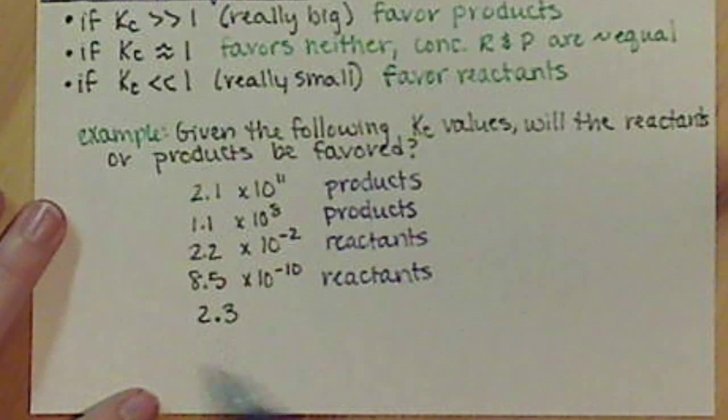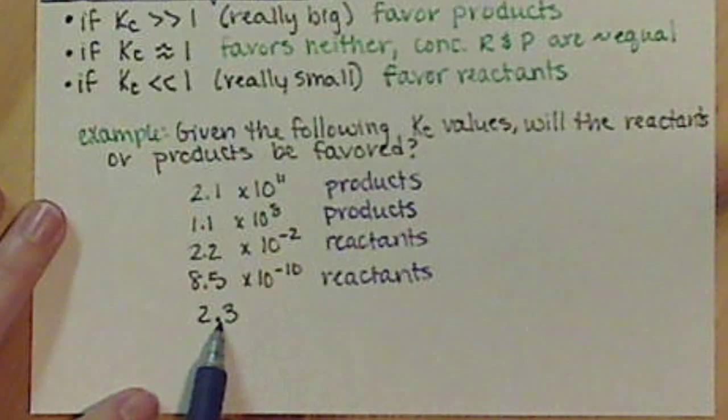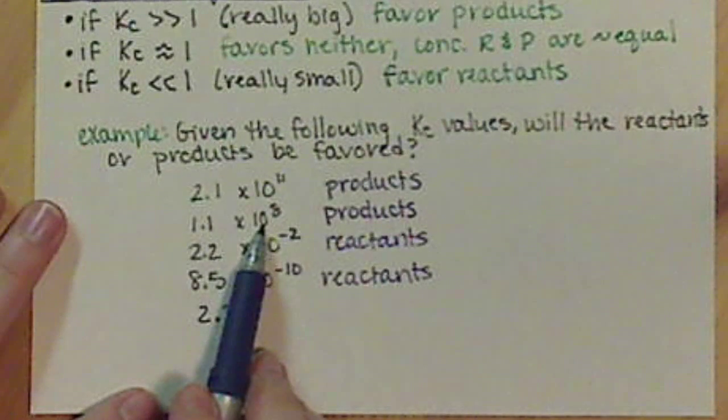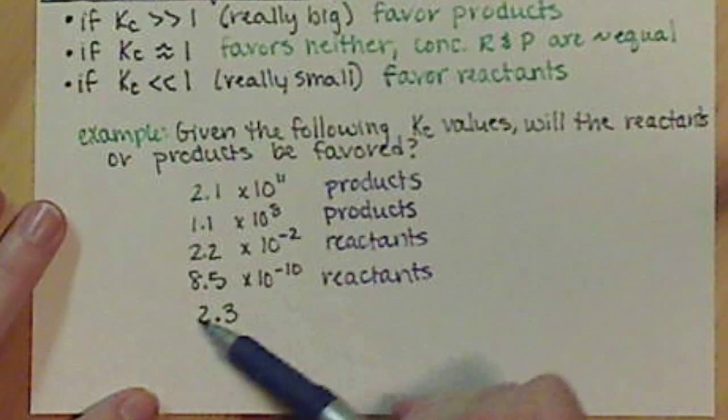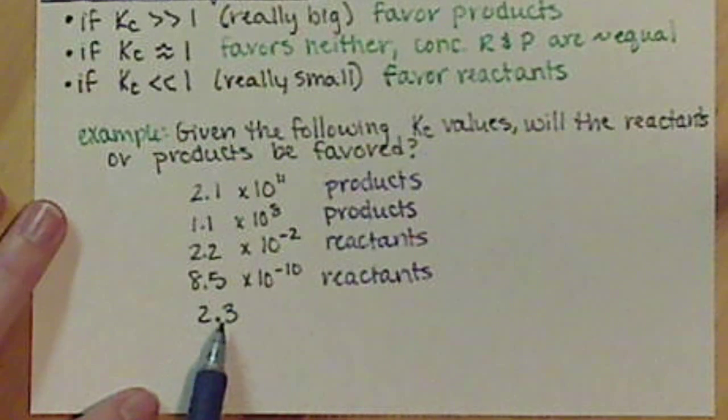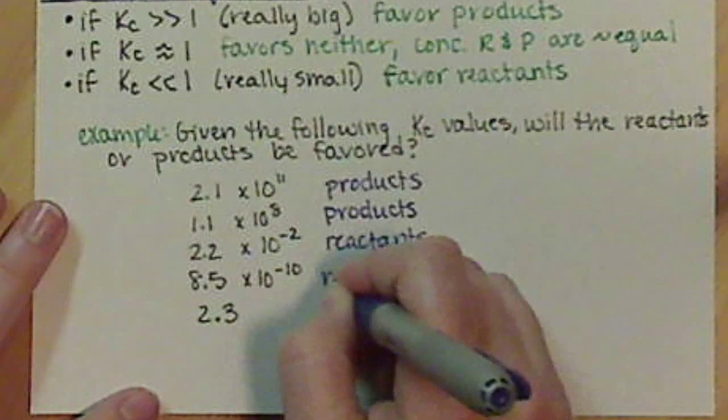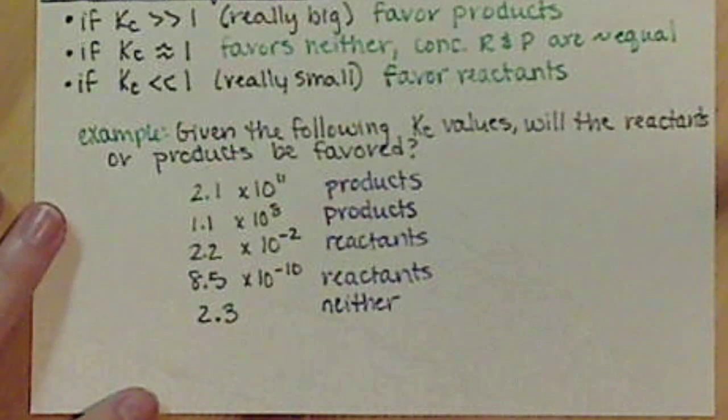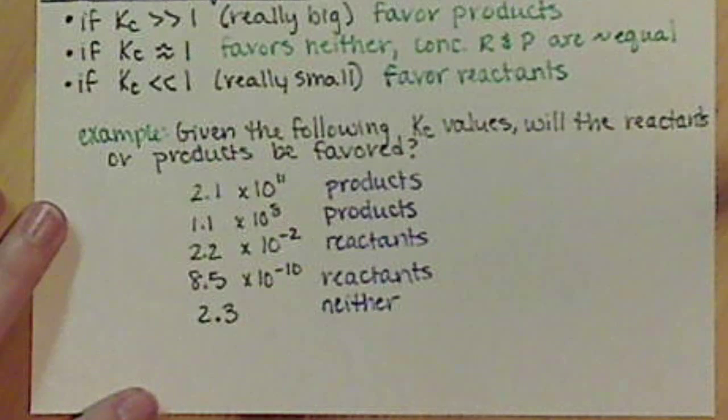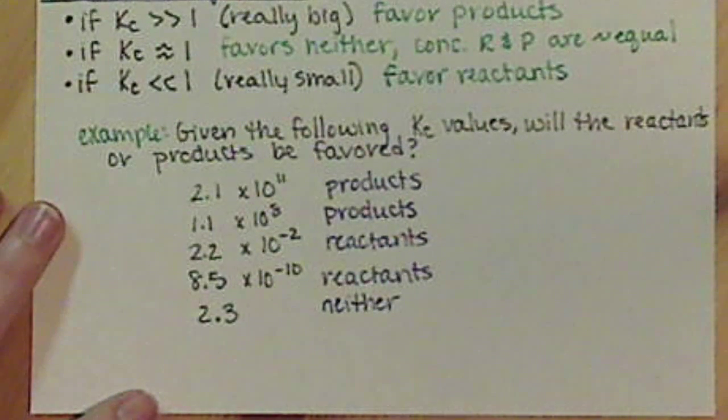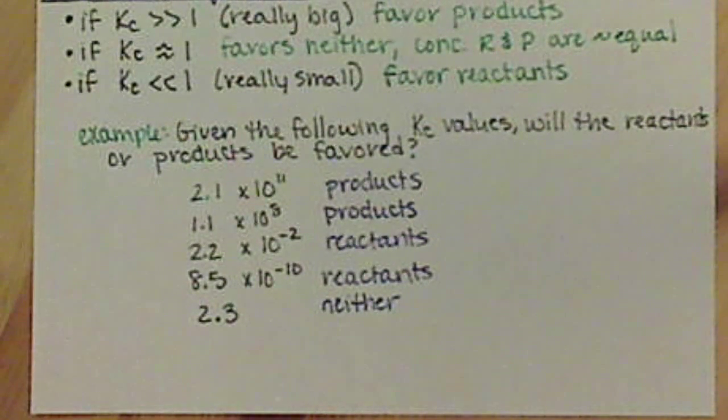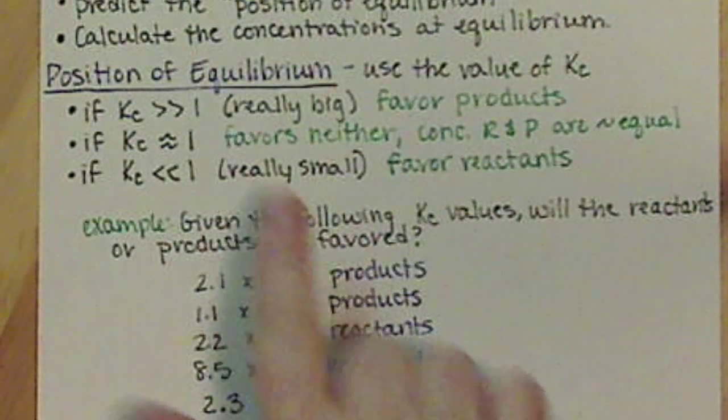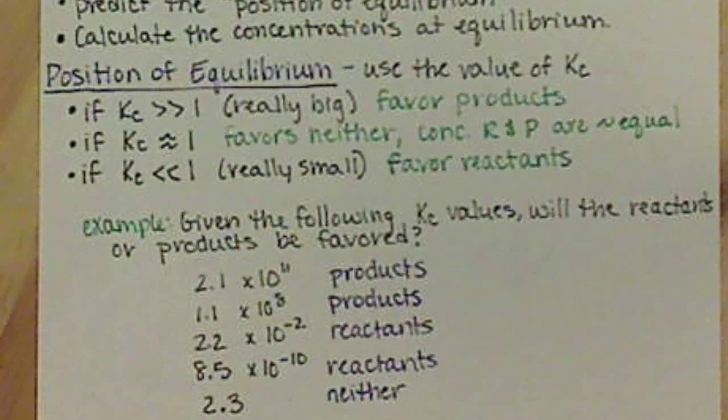For a value of 2.3, yes, it's a little bit bigger than one, but when we're comparing this value to things like 10 to the 8, 10 to the 11, there's a huge difference here. So this value here, I would say that this basically favors neither. If you had to say it favored one, you'd say products, because it is technically larger than one, but it's barely favoring the products. In general, neither the reactants or the products are favored. So that's how we use our Kc values to determine our position of equilibrium.